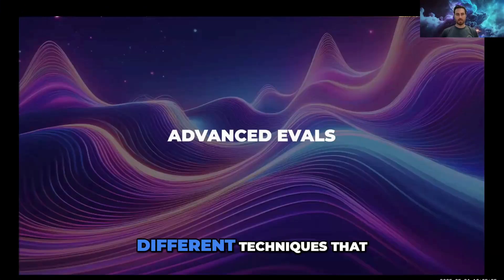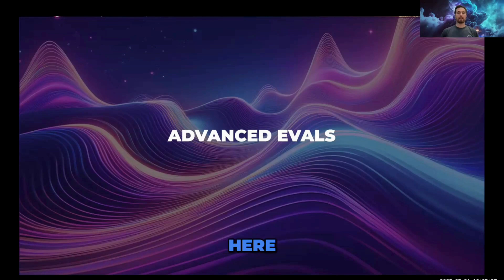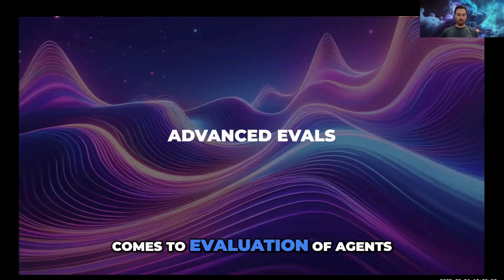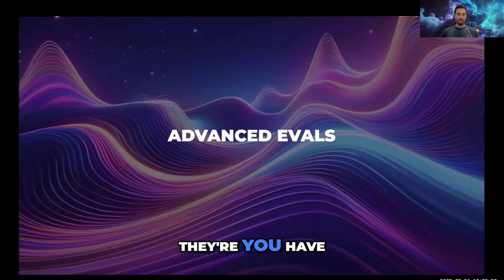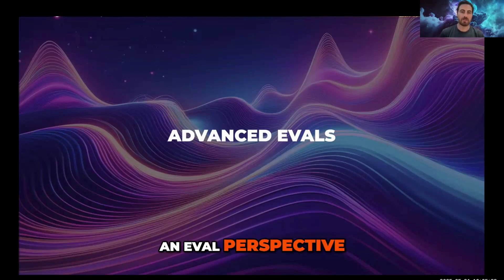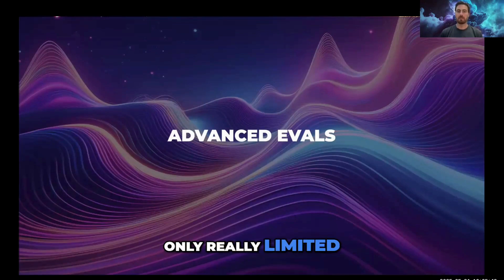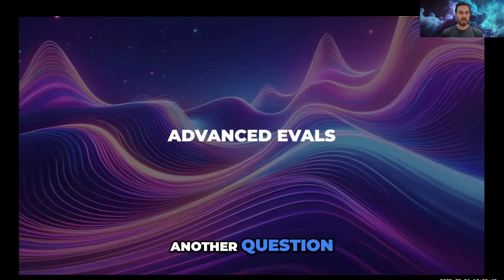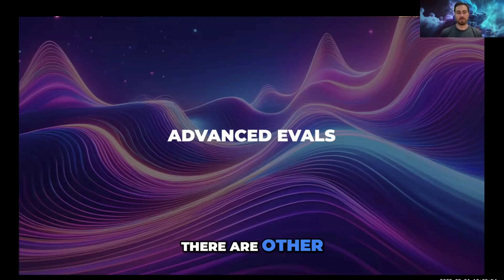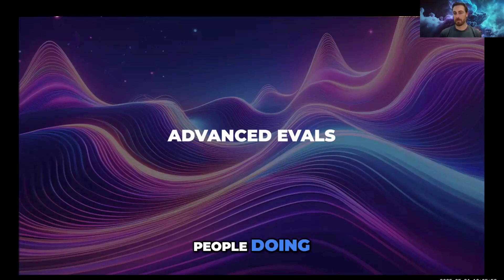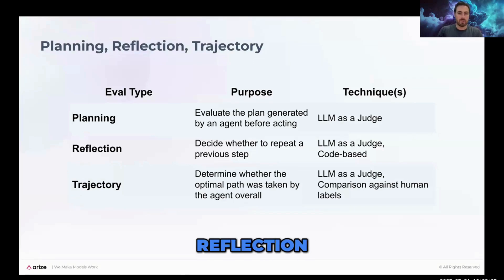For the advanced evals, there are a few different techniques to call out. The important thing to remember is that when it comes to evaluation of agents, you have LLM as a judge as a technique, and that really unlocks a lot of different things you can look at from an eval perspective. You can evaluate many different aspects of your application — you're only really limited by the prompt you construct. Planning, reflection, and trajectory are the three different ones we're going to look at.